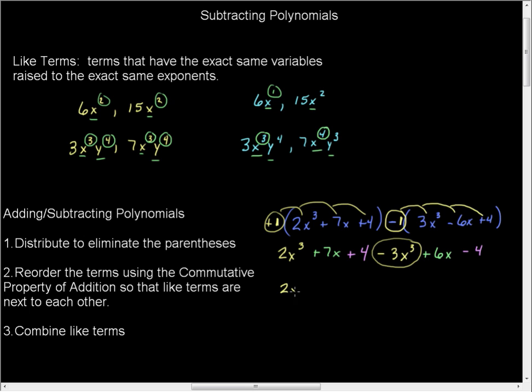And so this is going to be 2x³ - 3x³. I usually will go ahead and, once I circle them, I'll go ahead and cross them out as I'm working through just to make sure, just to tell myself, I've got these already rewritten.